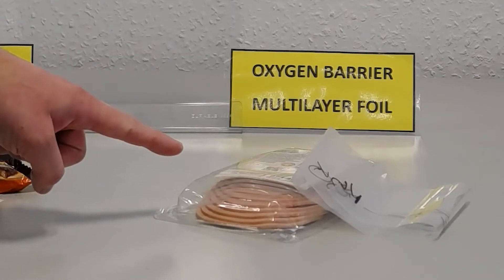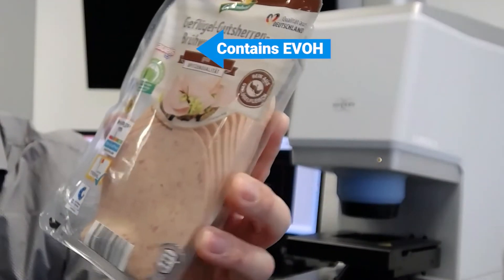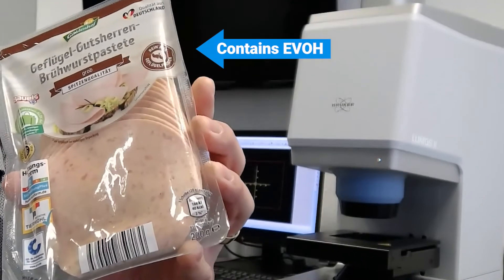This is food packaging. This kind of multilayer packaging foil usually contains a very thin EVOH oxygen barrier layer.